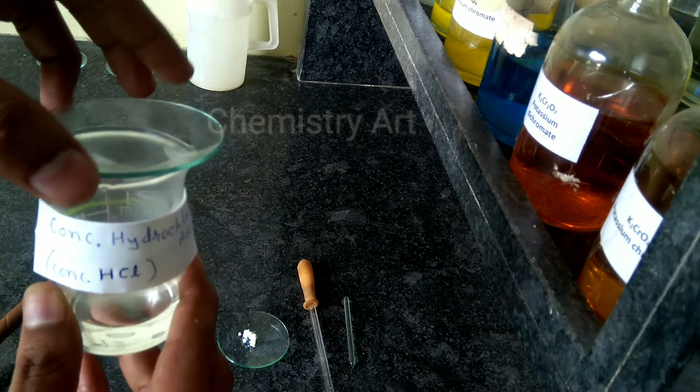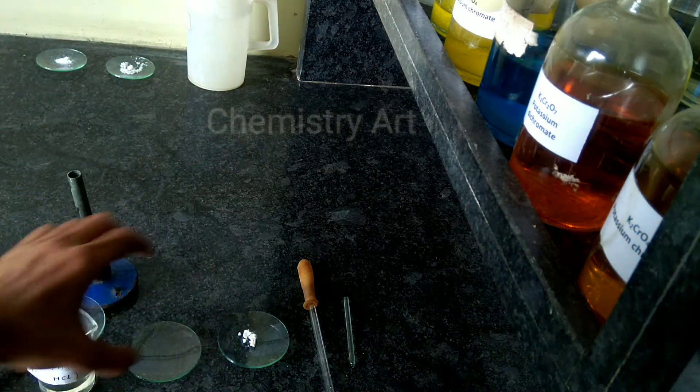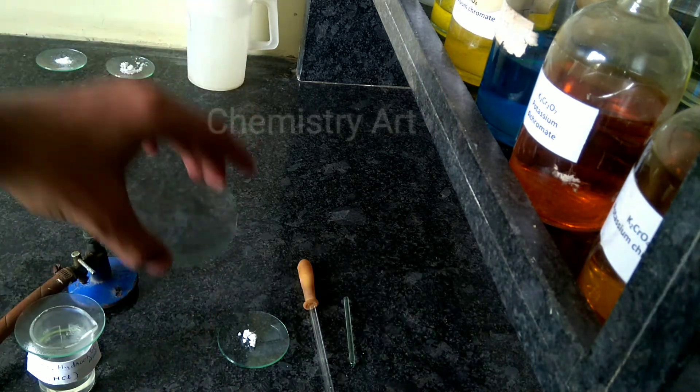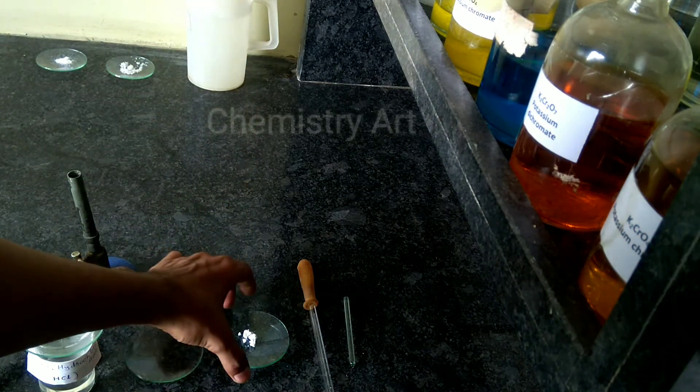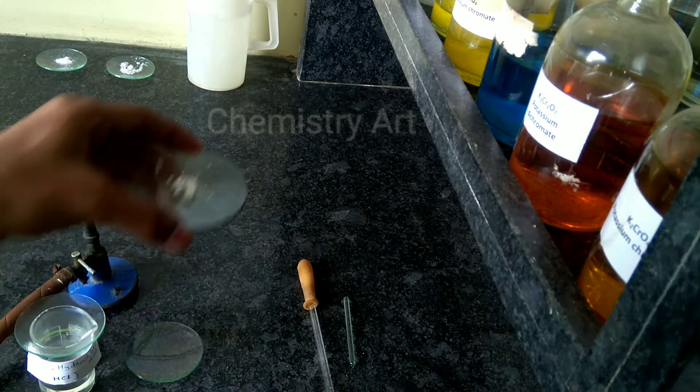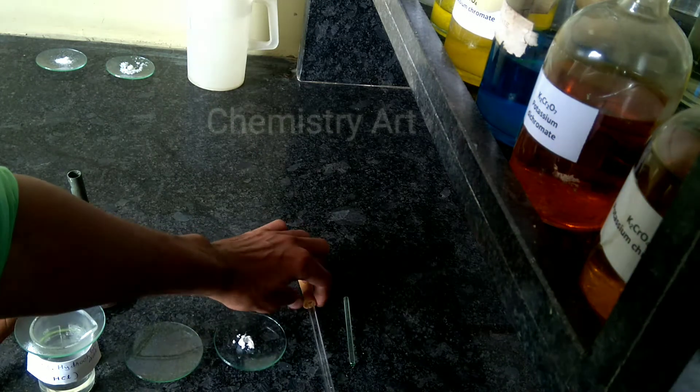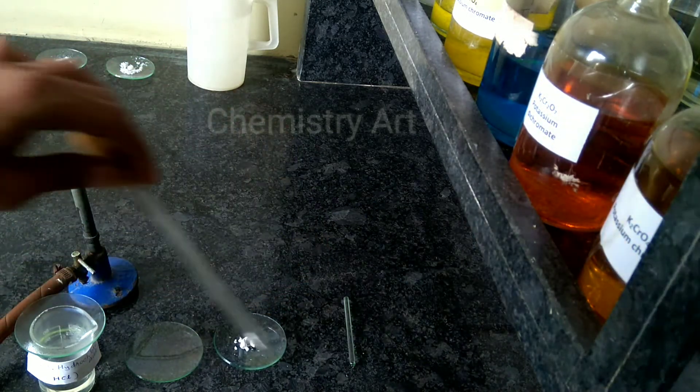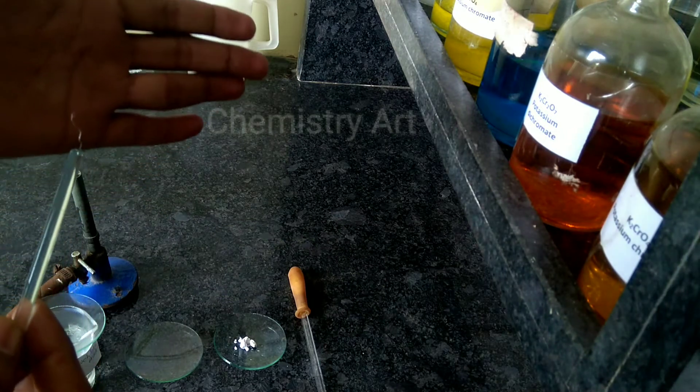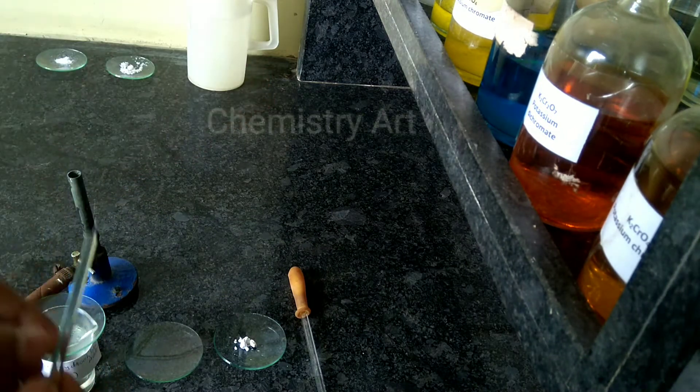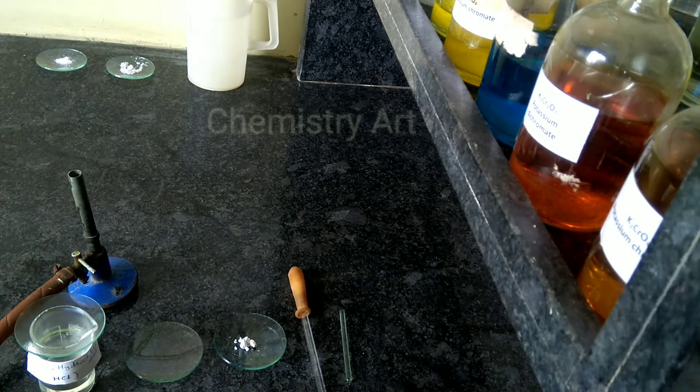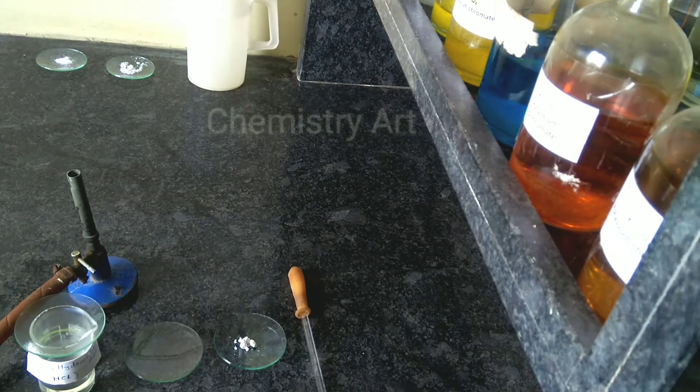For that we have here concentrated hydrochloric acid, the salt we are going to check, a watch glass, a dropper, and the very important thing is the platinum wire. Here you have to make a loop of it, then the burner. Now let's start the flame test.